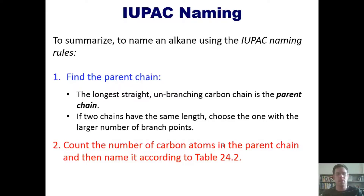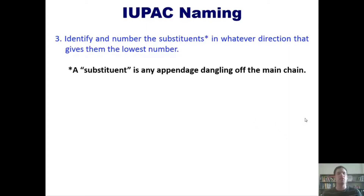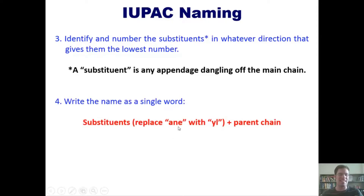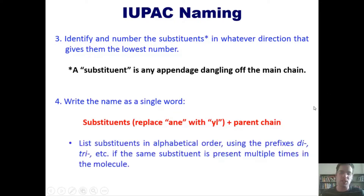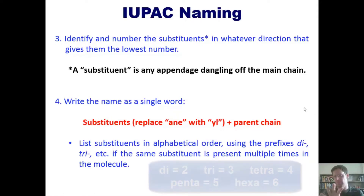Third, identify and number the substituents in whichever direction gives them the lowest numbers — substituents being any appendage dangling off the parent chain. Fourth, write the name as a single word: substituents first with '-ain' replaced by '-yl,' listed in alphabetical order, then the parent chain name at the end. Use prefixes di-, tri-, tetra-, penta-, etc. if the same substituent appears multiple times.